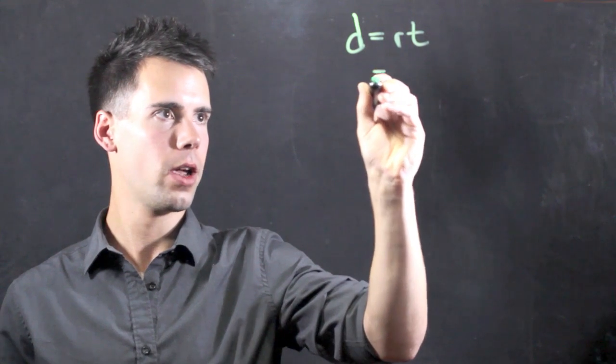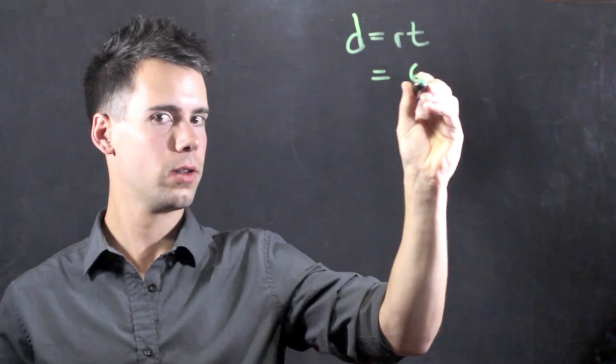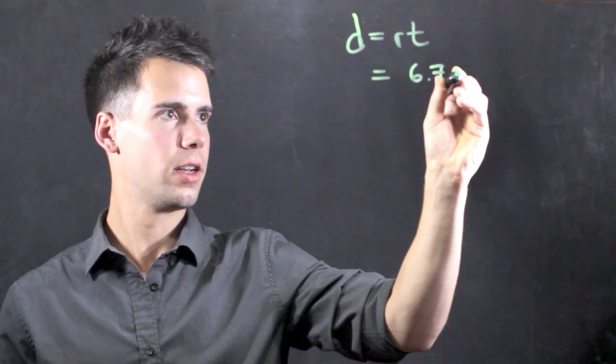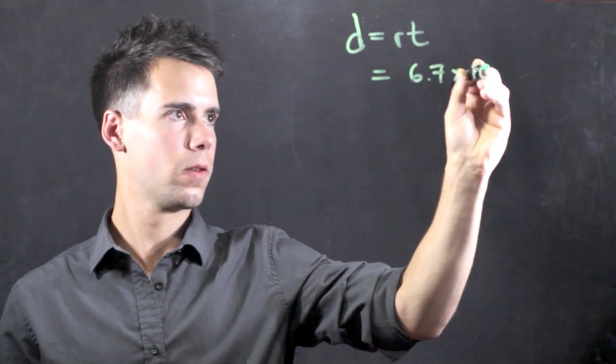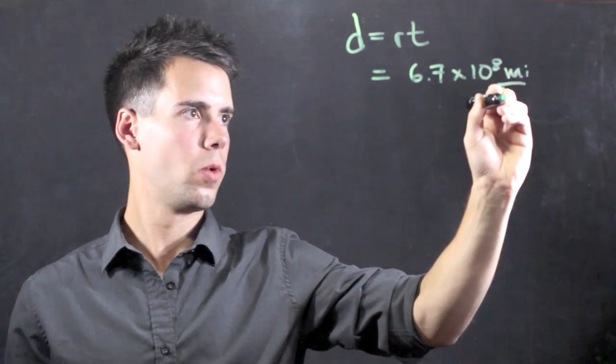Now the rate of a beam of light is simply 6.7 times 10 to the 8th miles in one hour.